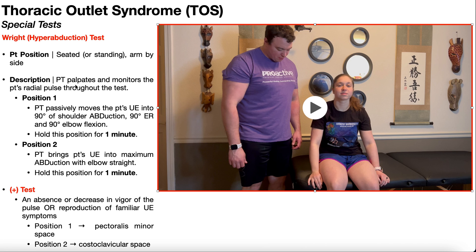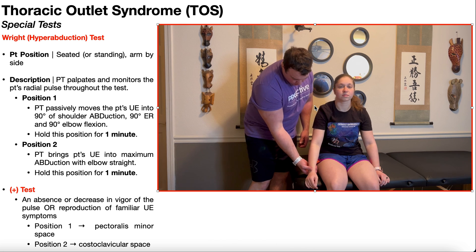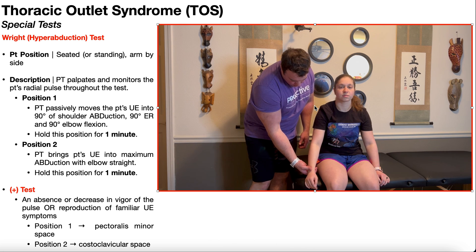The PT is going to palpate and monitor the patient's radial pulse throughout the duration of the test. This is a common theme with the special tests for thoracic outlet syndrome. The first step is to find the radial pulse, and once you find it, you're going to continue monitoring the strength of that pulse throughout the duration of this test.